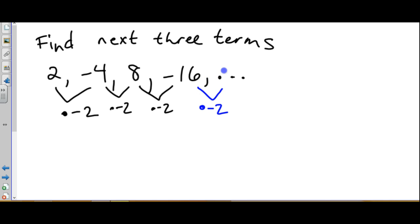So we times by negative 2 again, which would give us the next term of 32. And then we do it again, multiply by negative 2 again, and we get negative 64. And one more time, multiply by negative 2 again, and we get 128. So the next three terms are 32, negative 64, and 128.